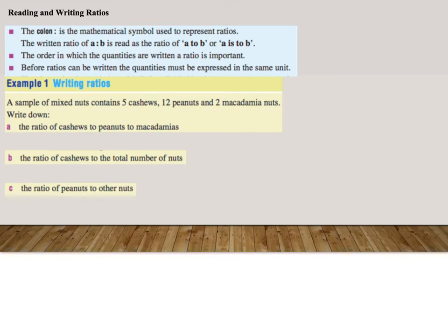Example 1. Writing ratios. A sample of mixed nuts contain 5 cashews, 12 peanuts, and 2 macadamia nuts. Write down the ratio of cashews, 5 cashews, colon, 12 peanuts, colon, macadamias, which is 2.